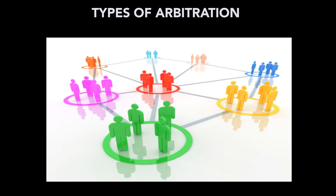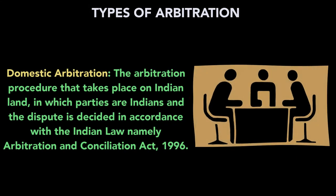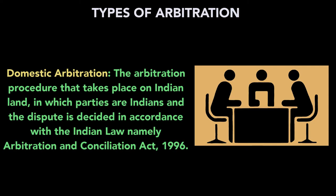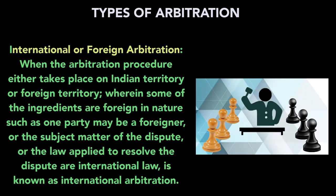Types of arbitration are based on subject matter and nature of modus operandi. Domestic arbitration is where the procedure takes place on Indian land, parties are Indians, and the dispute is decided under the Arbitration and Conciliation Act 1996. International or foreign arbitration occurs when the procedure takes place on Indian or foreign territory but some ingredient is foreign — one party may be a foreigner, or the subject matter or applicable law is international.